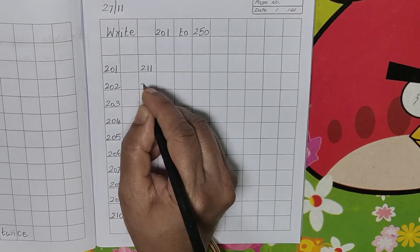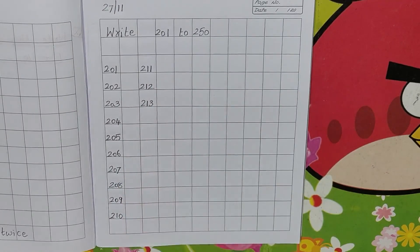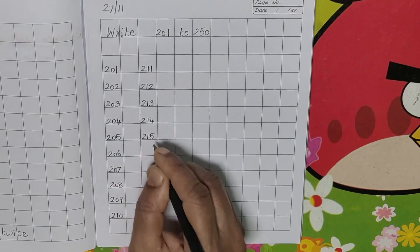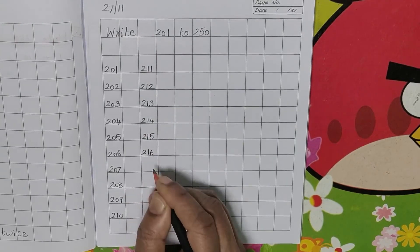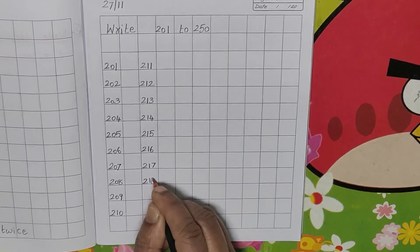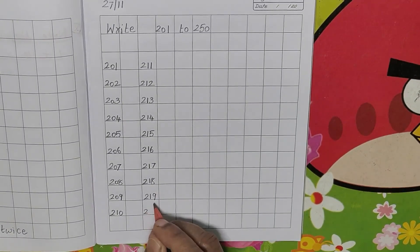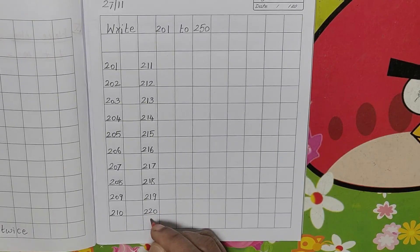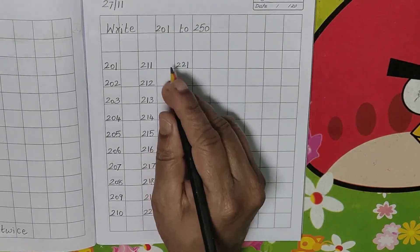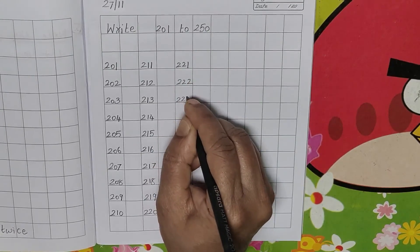211, 212, 213, 214, 215, 216, 217, 218, 219. After 219, 220. After 220, 221. Leave one line and write children.